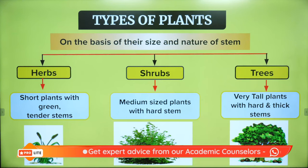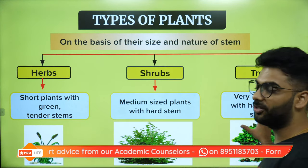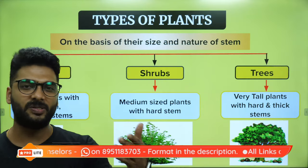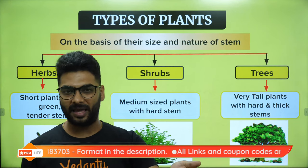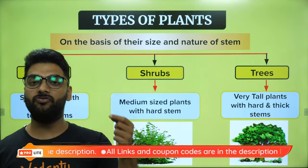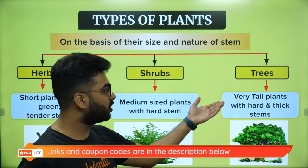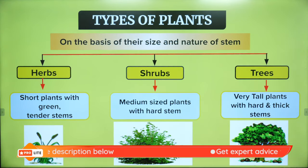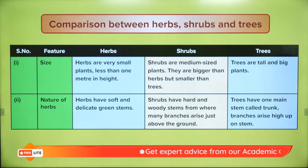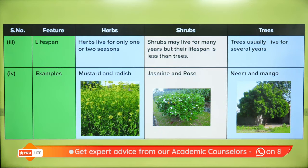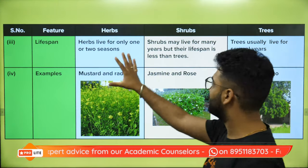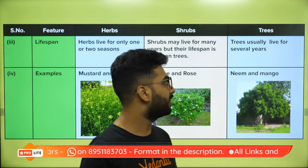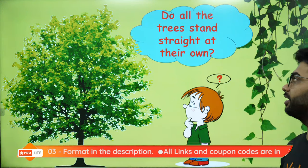Based on size and nature of stem, we have herbs, shrubs, and trees. Herbs have a green tender stem — like coriander, mint, spinach, rosemary. Shrubs have a thin woody stem — like lemon and rose. Trees include banyan, mango, and coconut. Herbs have a very short lifespan. Shrubs have a longer lifespan but lesser than trees, and trees have a very long lifespan — many trees live for more than 100 years.